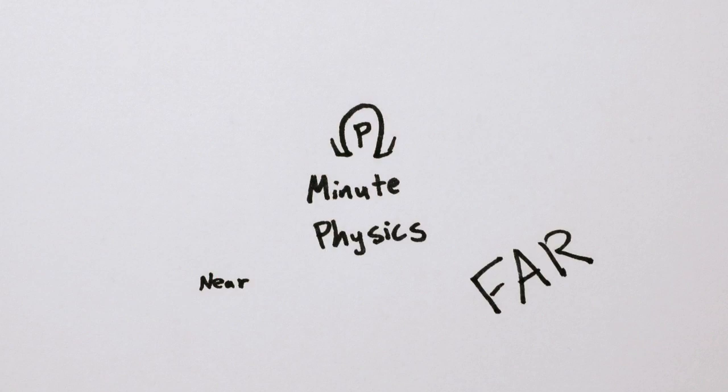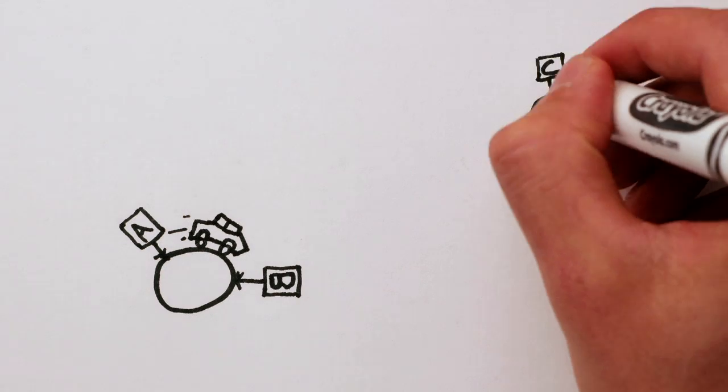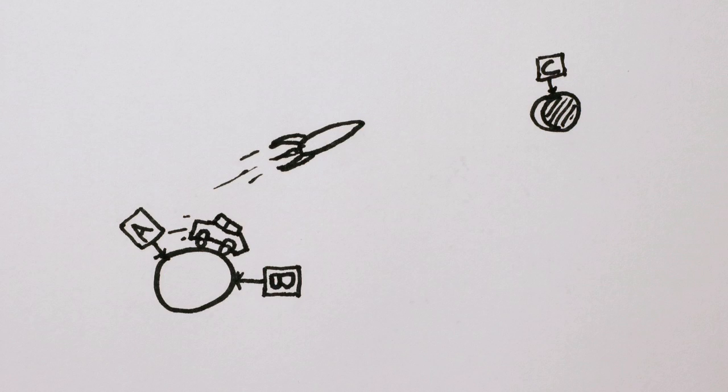What do we really mean by near and far? In a way, distance is just a measure of how hard it is to get between two points. The harder to get from here to there, the more distant there is.